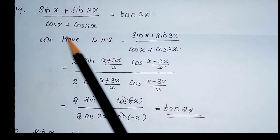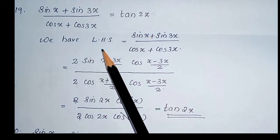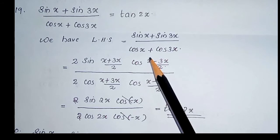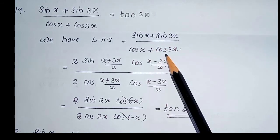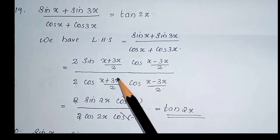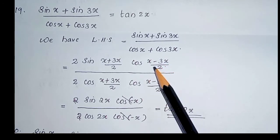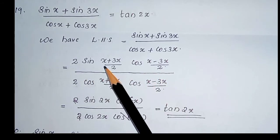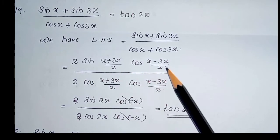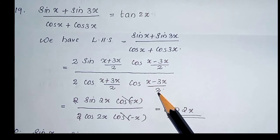Next, question 19: sin x plus sin 3x divided by cos x plus cos 3x equal to tan 2x. LHS is sin x plus sin 3x divided by cos x plus cos 3x. We know the identity sin x plus sin y equal to 2 sin((x+y)/2) cos((x-y)/2), and cos x plus cos y equal to 2 cos((x+y)/2) cos((x-y)/2). Using this identity, we can write 2 sin((x+3x)/2) cos((x-3x)/2) divided by 2 cos((x+3x)/2) cos((x-3x)/2).